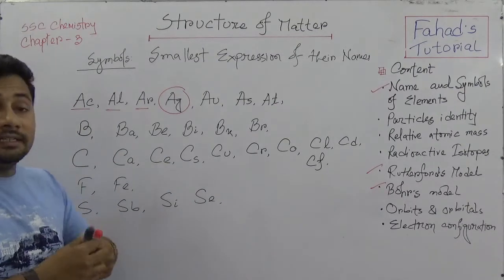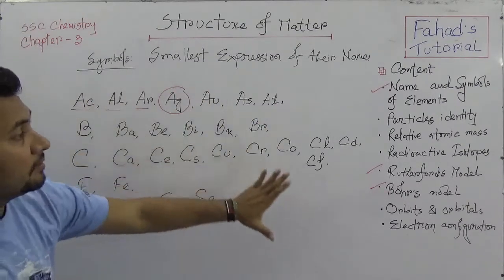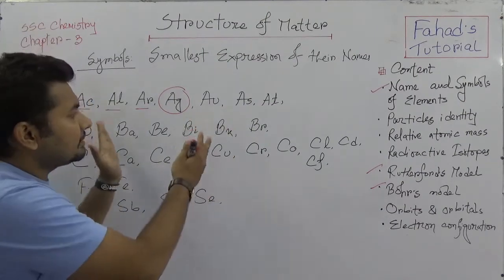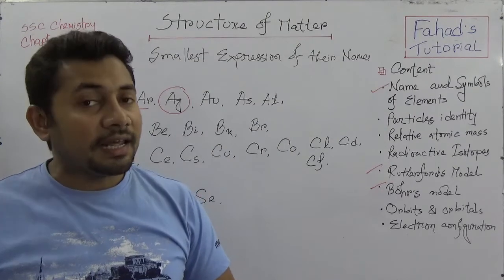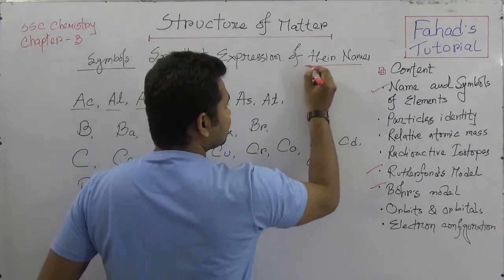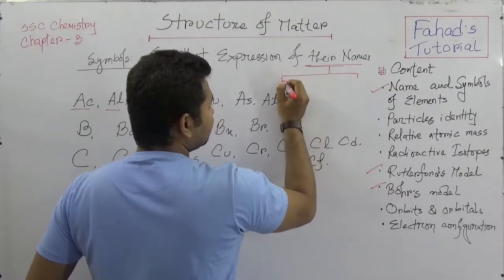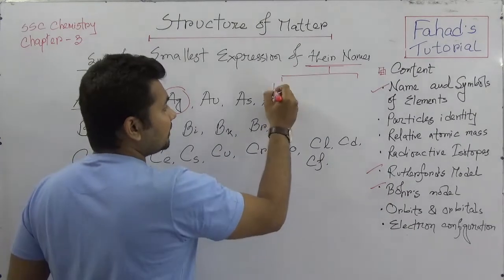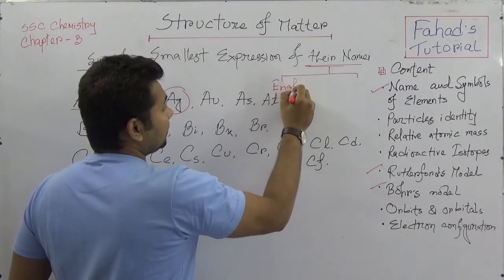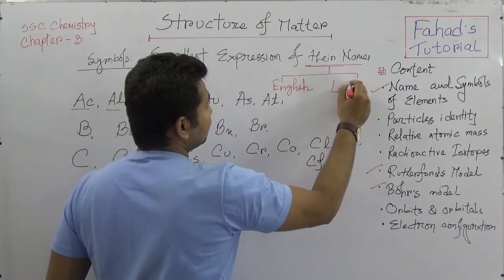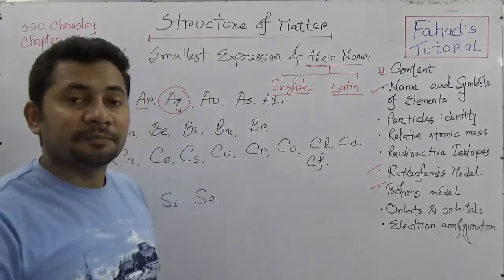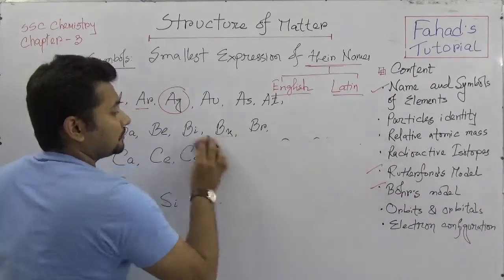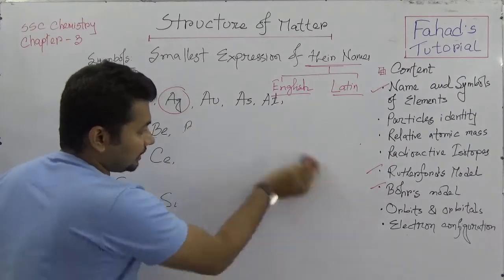These are the names of the elements. Most importantly, you need to know that there is a mixture of English and Latin names. The names are divided into several groups — it can even be Arabic, like boron and zirconium — but mainly we have English and Latin. So what are those Latin names?